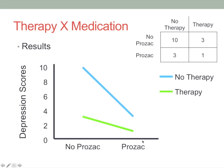When you look at these line graphs, each end of a line depicts a different group. Since we have two lines and each line has two ends, we can infer there are four groups. You figure out the qualities of the groups by combining what type of line it is — blue or green — and what side of the graph it's on: the no-Prozac side or the Prozac side.